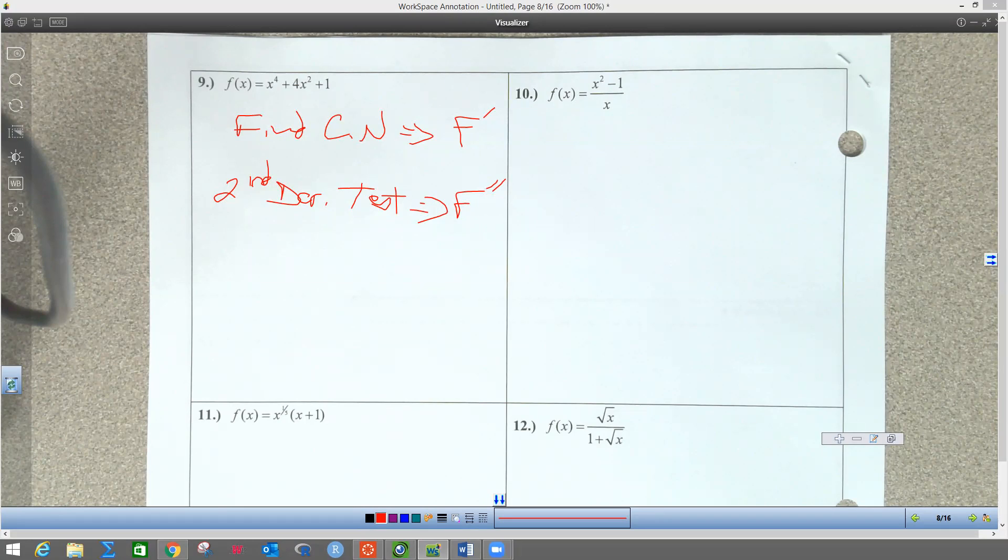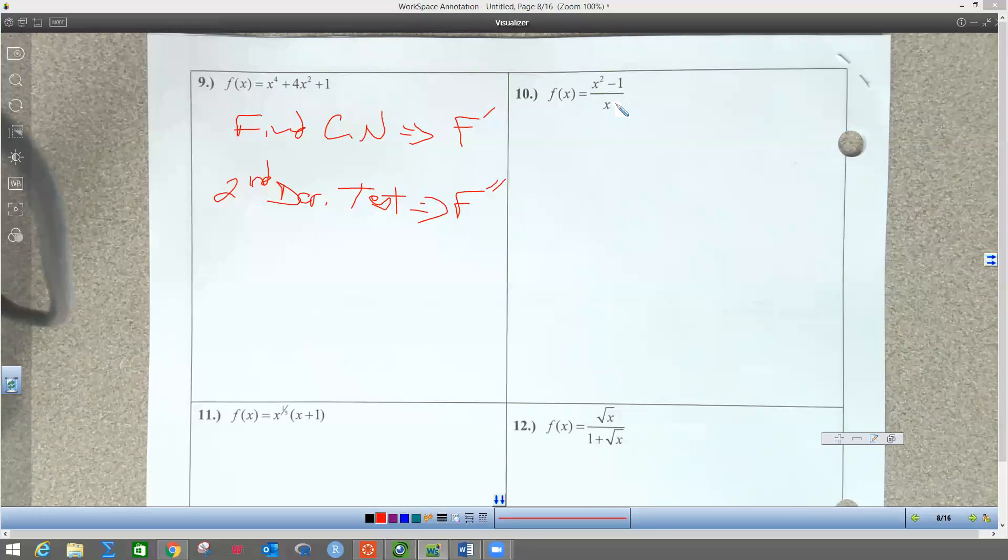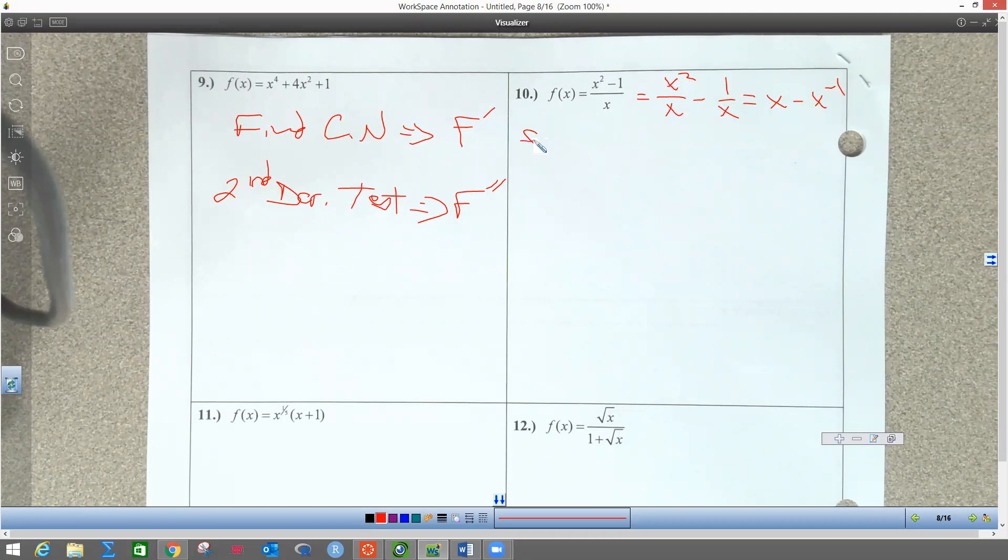When I have a monomial, I would break this up and put the monomial under each term, then simplify this to x minus x to the negative one power. This one reduces, this doesn't, but I can bring that up. That makes doing the derivative much faster than doing quotient rule. If you did quotient rule it would be fine—it's the same answer—but I think it's faster to do straight-up power rule by rewriting it like this.